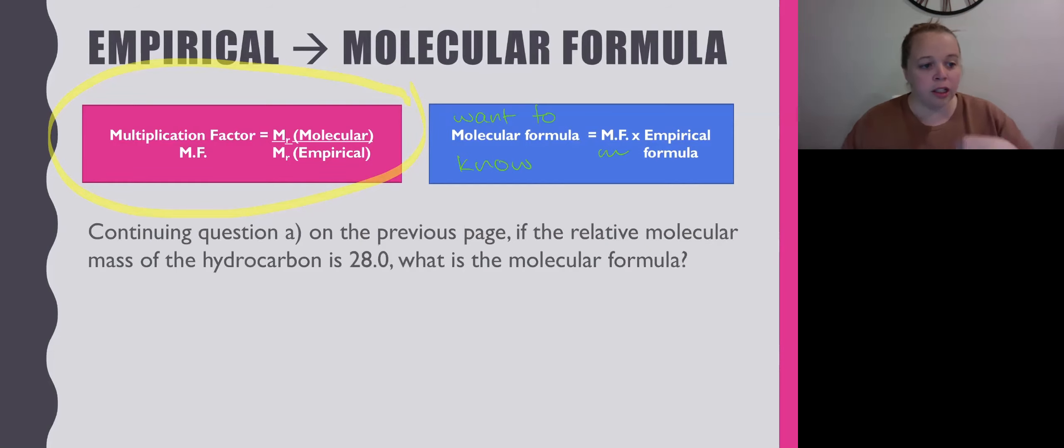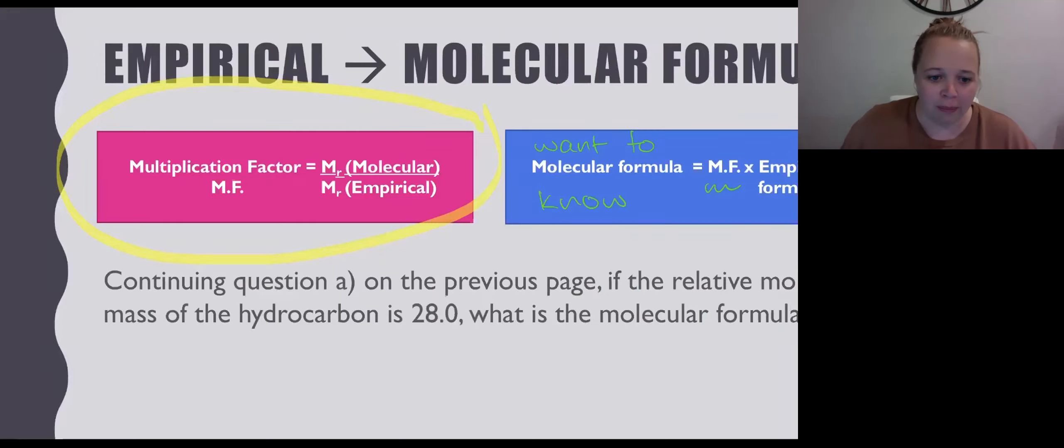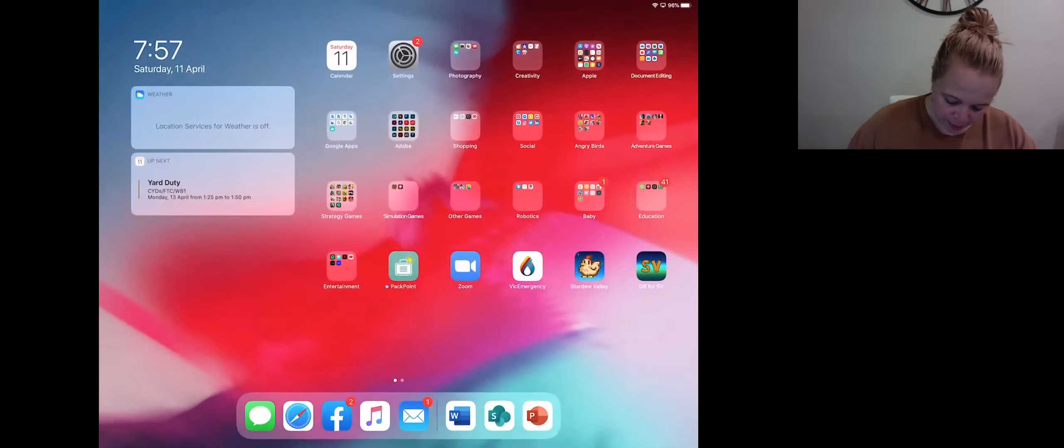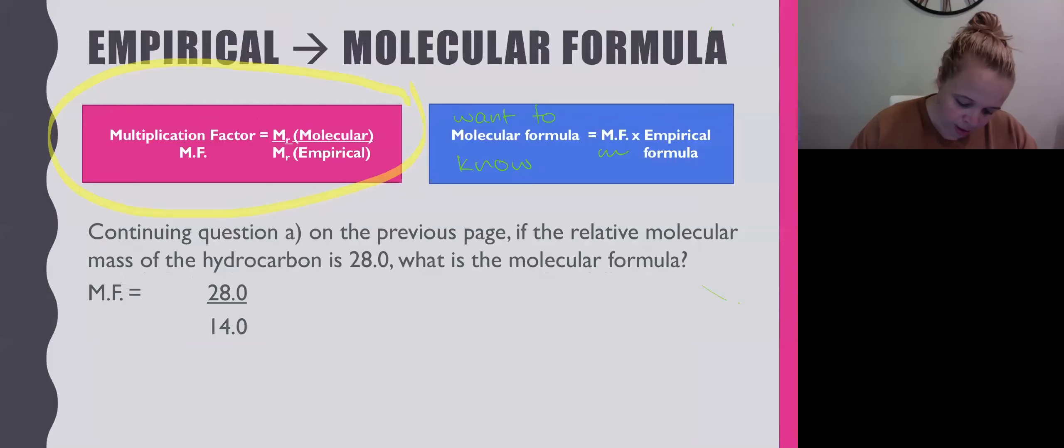So when you continue on from question A from the previous page, we're not continuing on from question B or C there. We're continuing on from question A. We're going to look at the relative molecular mass of the hydrocarbon is 28 and what is its molecular formula. So I'm going to get rid of that there. We're going to be looking at the blue equation.